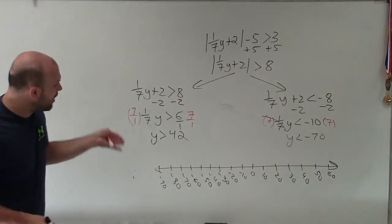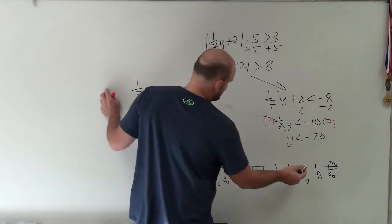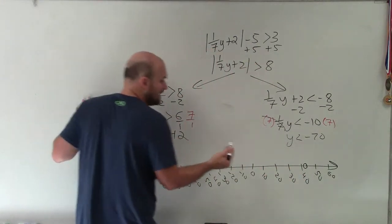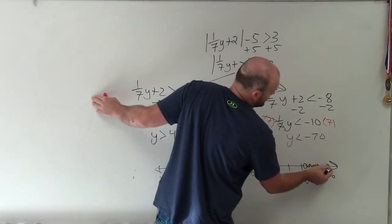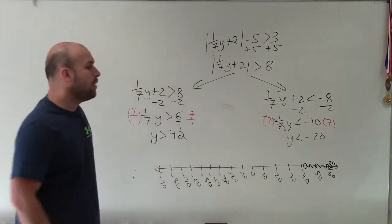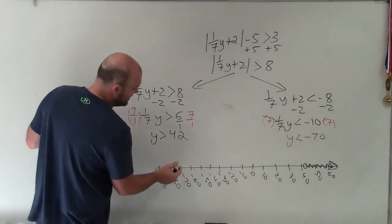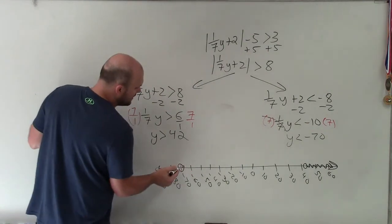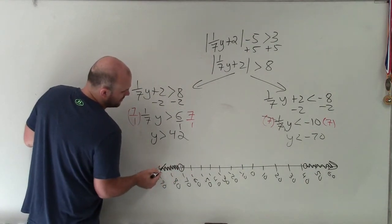So what my graph says is y is greater than 42. So it's going to be an open circle at 42. And since all values greater than 42, I'm going to go to the right. And then y is less than negative 70. So I'm going to put a circle at 70. Since it's less than, it's going to be open. And then all points to the left are going to be less than.